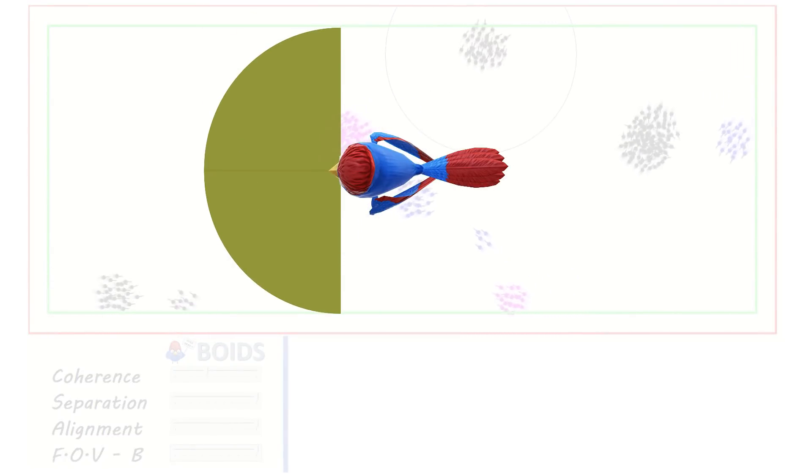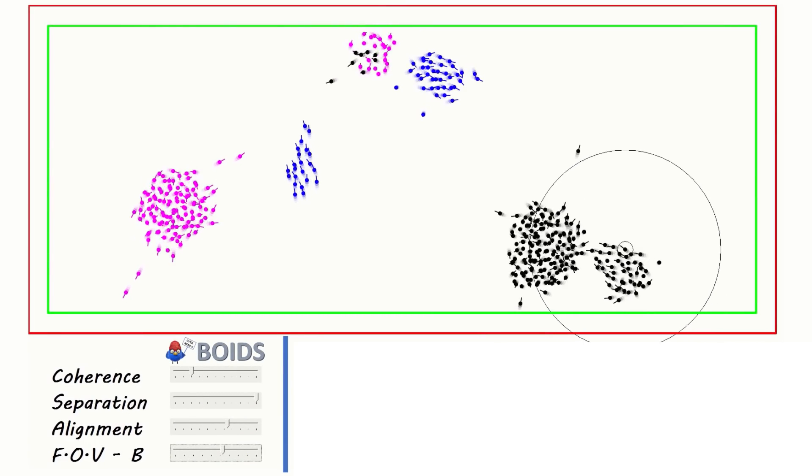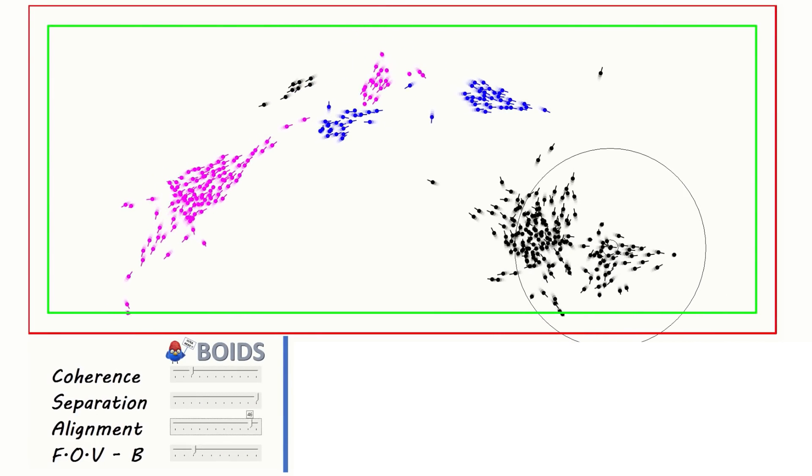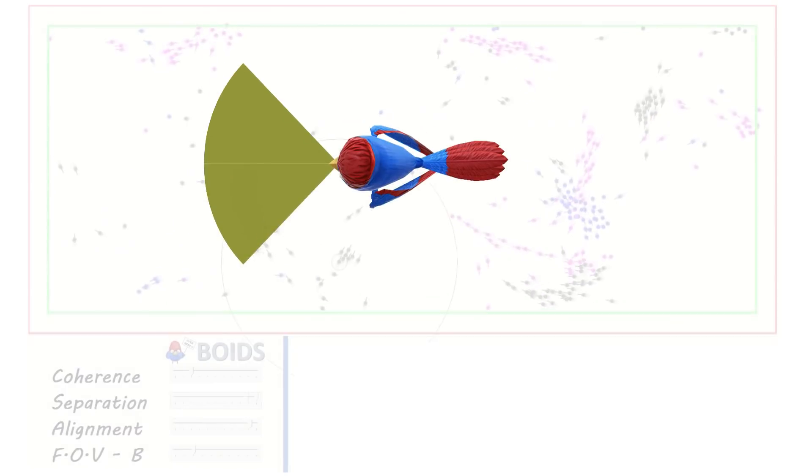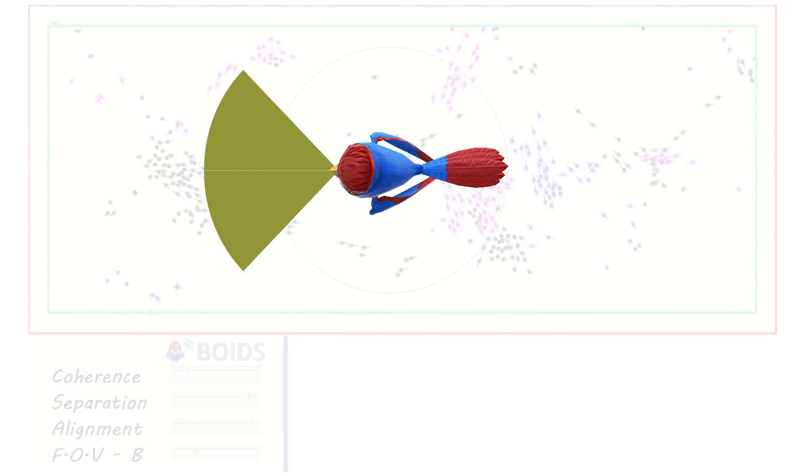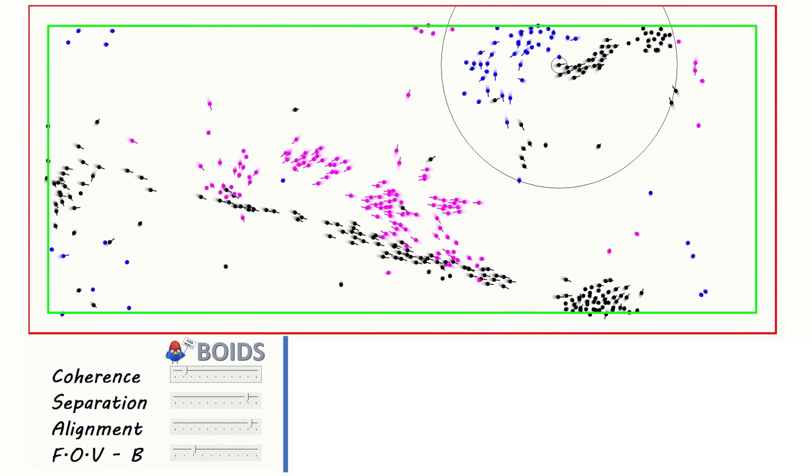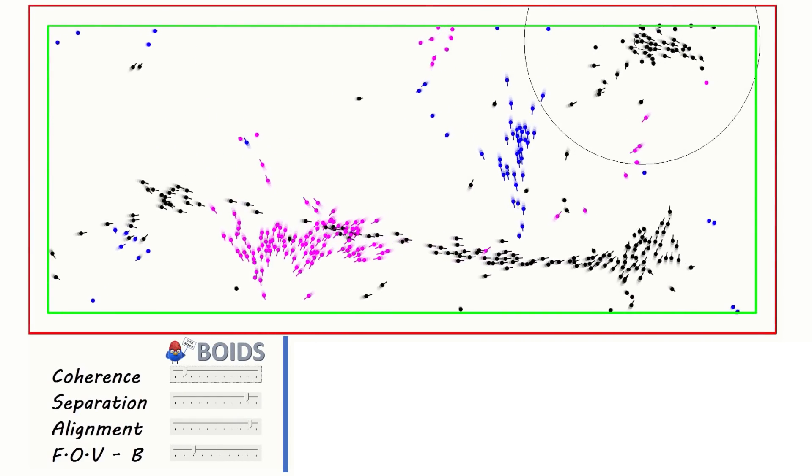When I switch this on and give each Boid a narrow field of view, this starts to break up the cluster, as they now can't see everyone. Bringing it right down and playing around with the other sliders, and I can get them to string out into long trains. This is the same as the behavior seen elsewhere, and to get the Boids to do this, you do need to be able to adjust the field of view.